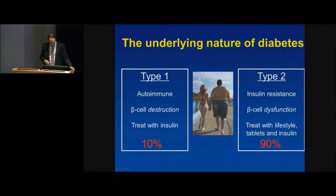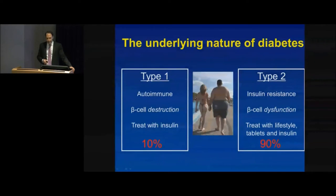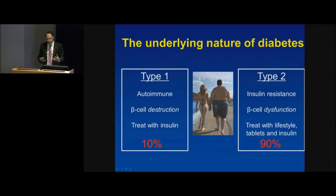This slide highlights the important difference between type 1 and type 2 diabetes. Type 1 diabetes is an autoimmune disease — the body causes antibodies to destroy certain tissues, in this case the pancreas. It leads to beta cell destruction, treatment is with insulin in all cases, and it accounts for about 10% of diabetes.